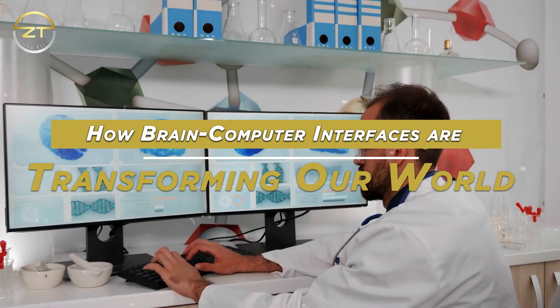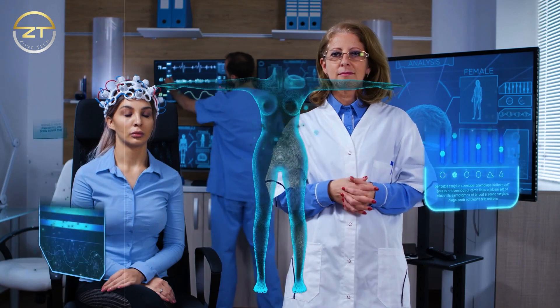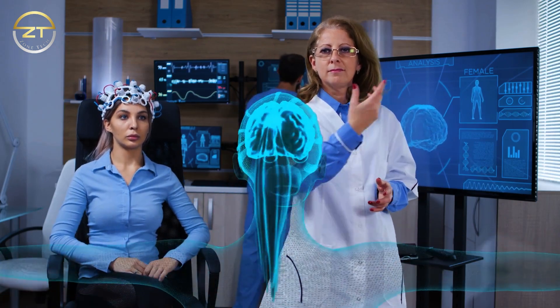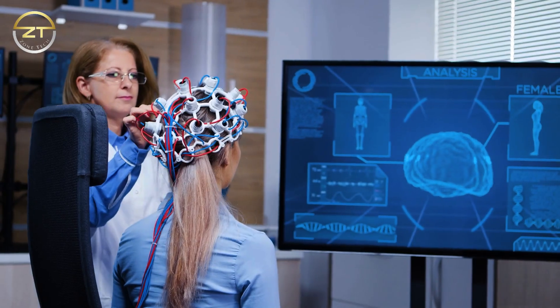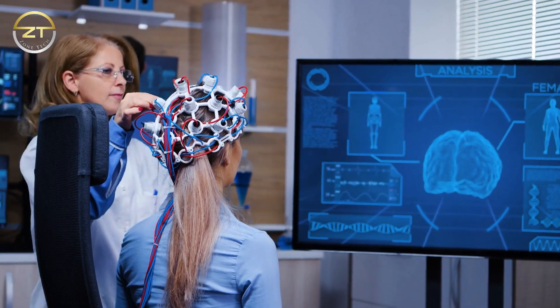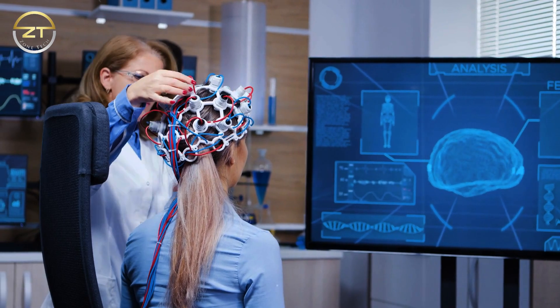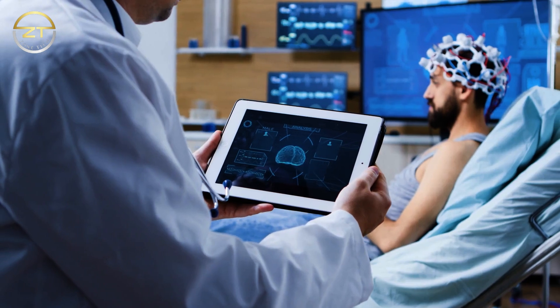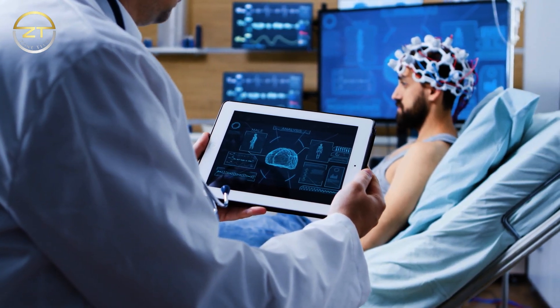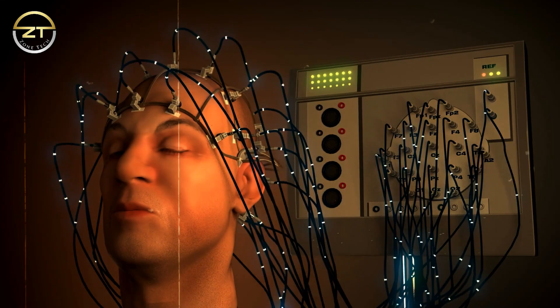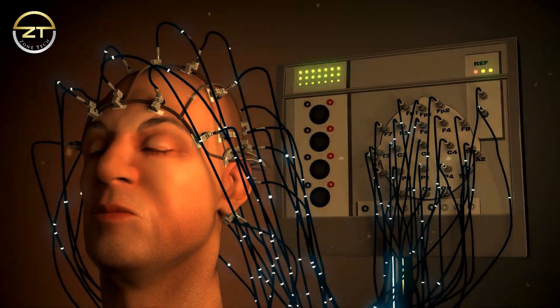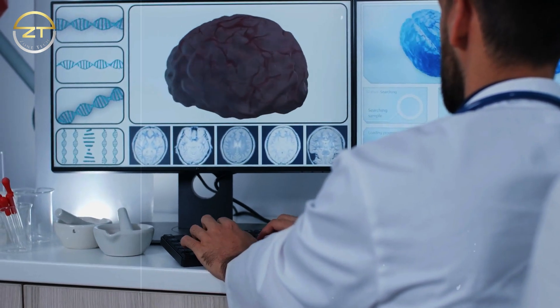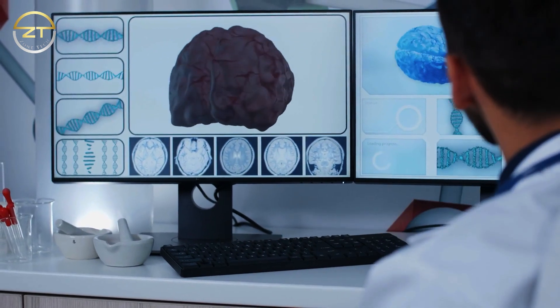How brain-computer interfaces are transforming our world? Brain-computer interfaces, BCIs, are transforming our world by enabling people to interact with technology in new and innovative ways. One major application of BCIs is in the field of assistive technology, where they are being used to help people with disabilities to communicate, control prosthetic limbs, or access the environment using their thoughts. For example, BCIs have been used to help people with paralysis control robotic arms, allowing them to perform everyday tasks such as feeding themselves or grasping objects. BCIs are also being used to help people with speech impairments to communicate by translating their thoughts into speech or text.